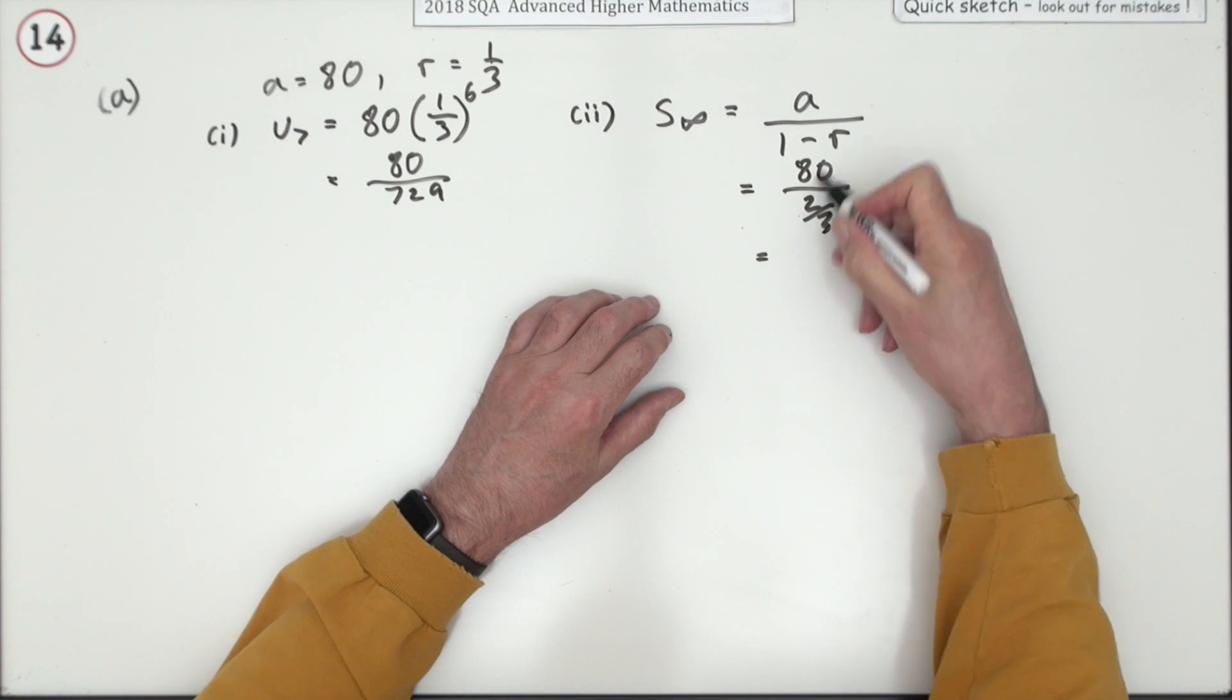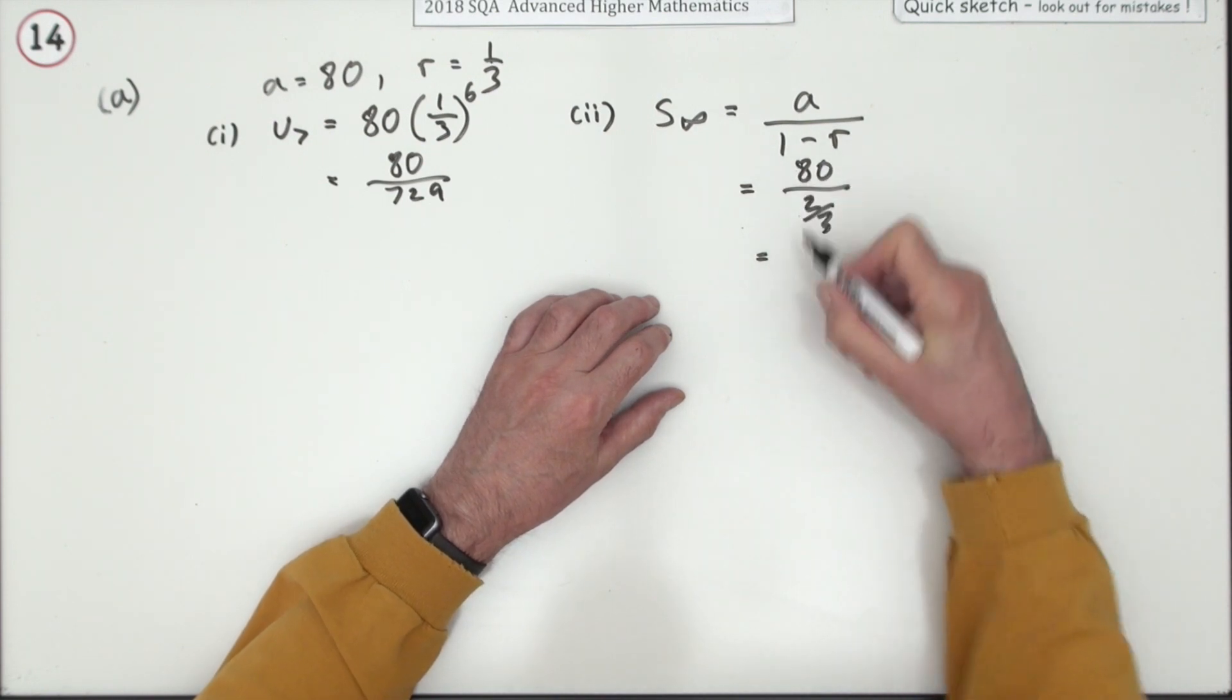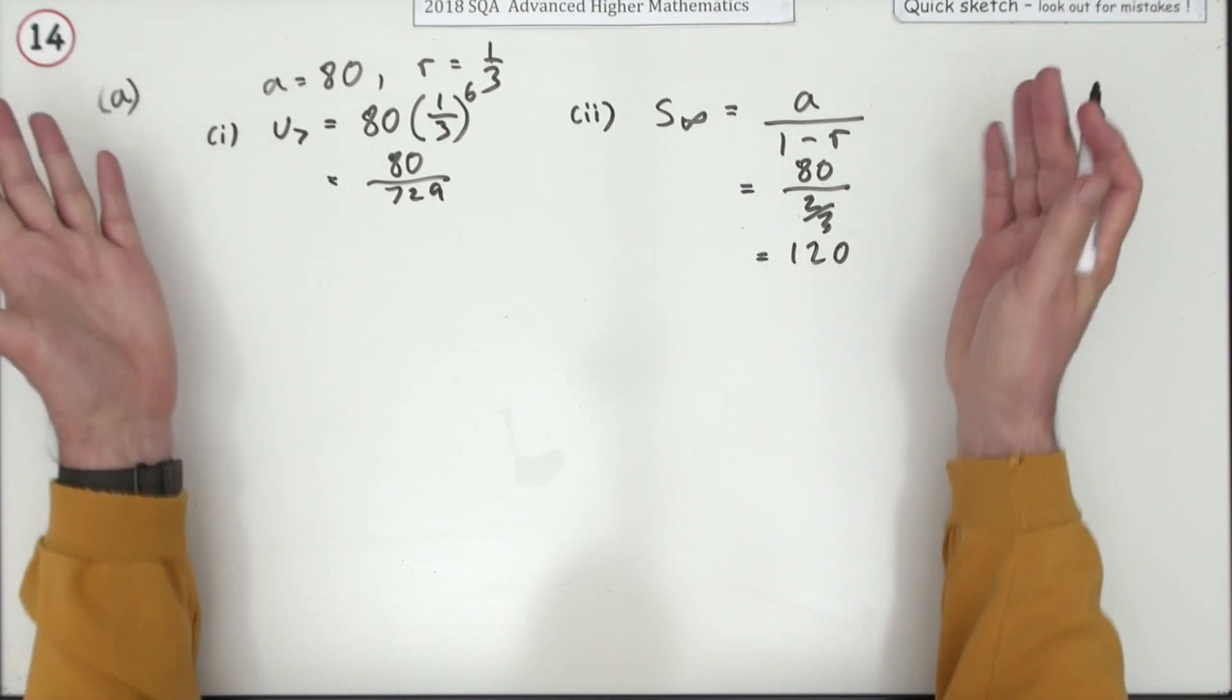So, that makes it 40, but the 3 times the 40, 120. Four marks.